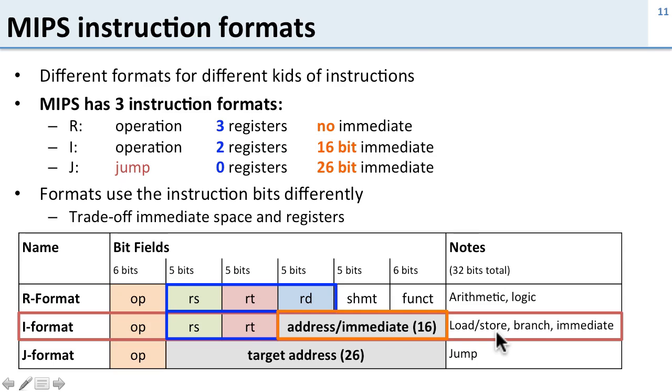And this is used for load and store instructions which have immediate offsets, branch instructions which tell you where you're going to branch to, and then add immediates and the like which have an immediate value in it.